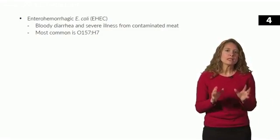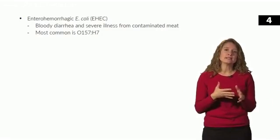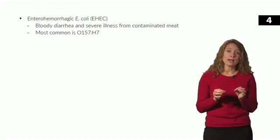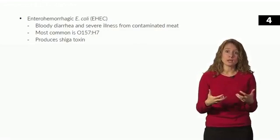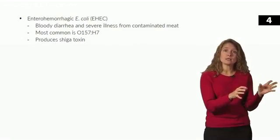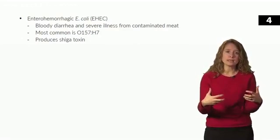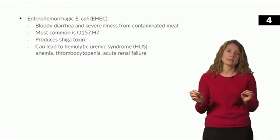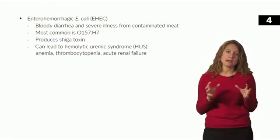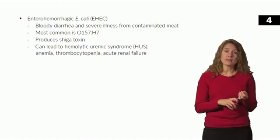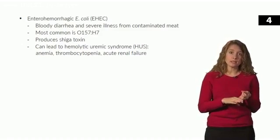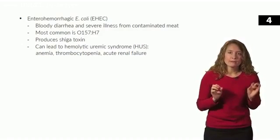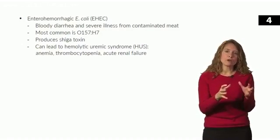Enterohemorrhagic E. coli is very serious and potentially deadly. It can produce shiga toxin, which causes vascular damage and results in bloody diarrhea and hemolytic uremic syndrome (HUS). HUS is a triad of: microangiopathic hemolytic anemia, thrombocytopenia, and acute renal failure. This is very bad and can lead to death.